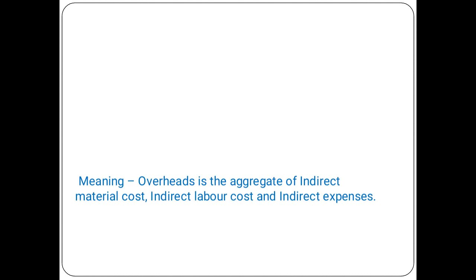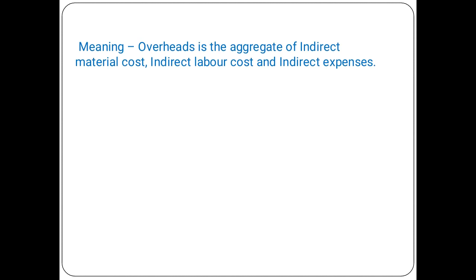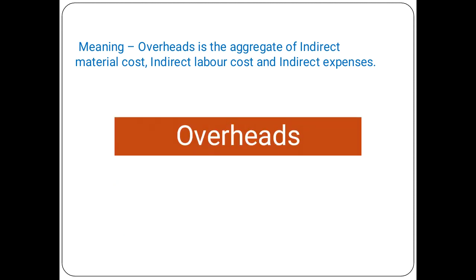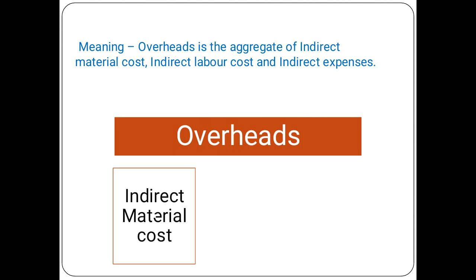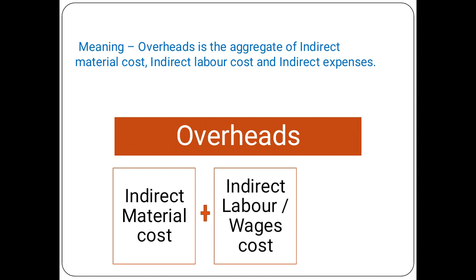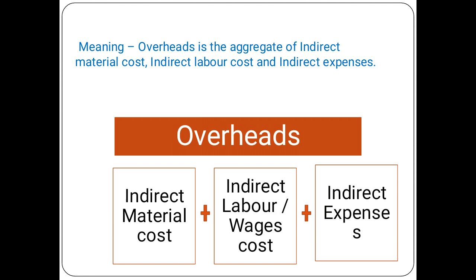First point is the meaning of overheads. Overheads is the cost of indirect material, indirect labor, and indirect expenses. That means overheads is the aggregate — in the sense that the total of indirect material cost plus indirect labor cost plus indirect expenses. When we aggregate these, the total of indirect material cost, indirect labor cost, and indirect expenses is called overheads.